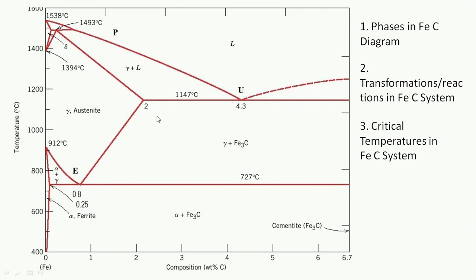At some point below the liquidus, the alloy will be some percentage solid. Further below, it will be more solid. And below this line, it will be completely solid. At room temperature, it will be completely in solid state. These are the overall things involved in the Iron-Carbon diagram. We will study one portion at a time and cover all the things involved in this diagram.